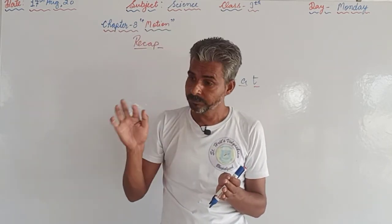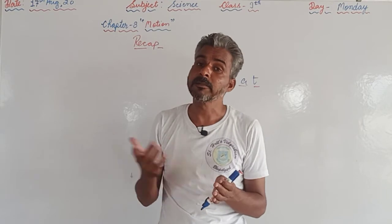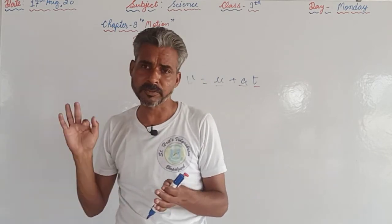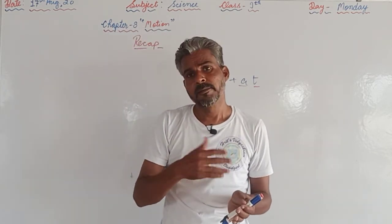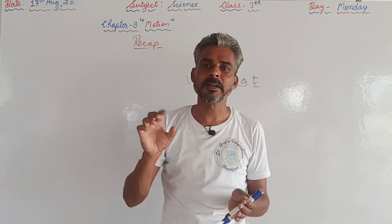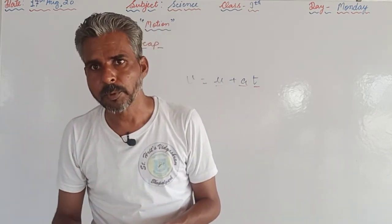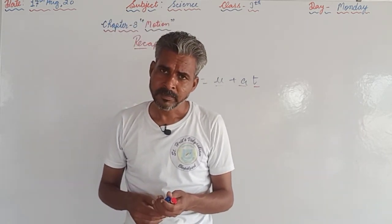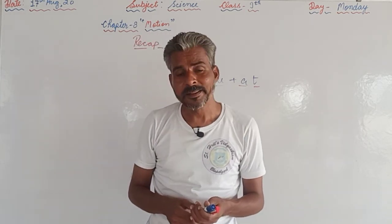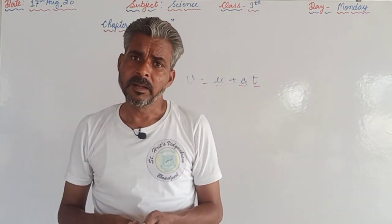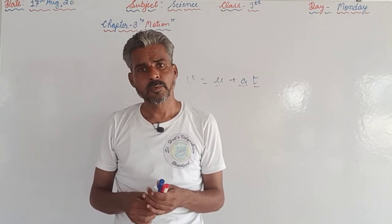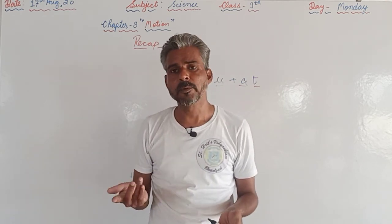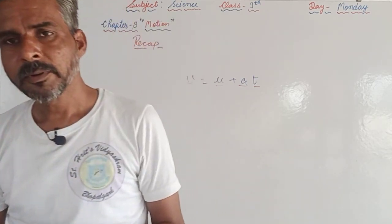Theoretical questions are not given in the book, so note down answers to: what is motion, when is an object in motion or at rest, what is uniform/non-uniform motion, velocity, speed, distance, displacement — all concepts we discussed. After completing, take a photo and upload it to the school's WhatsApp number so we can track homework completion. Thank you very much.